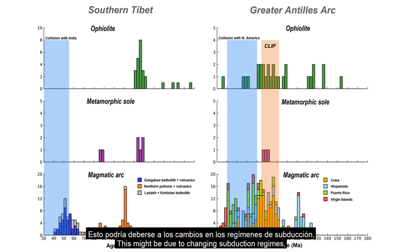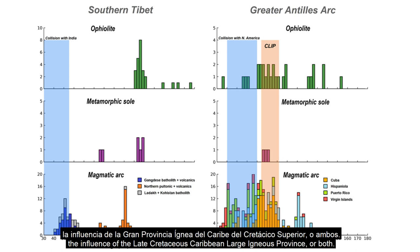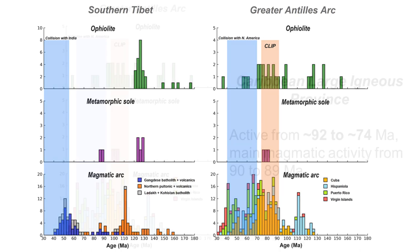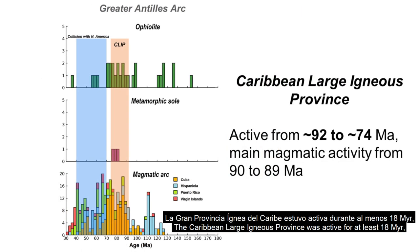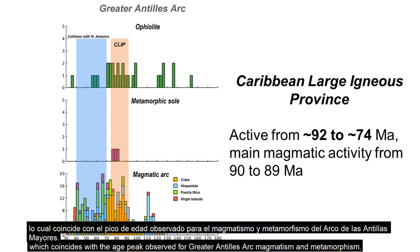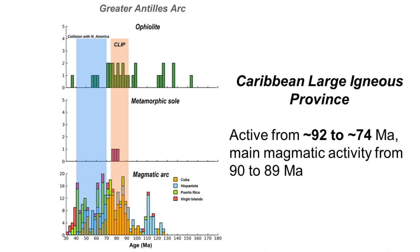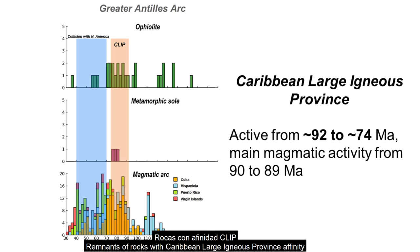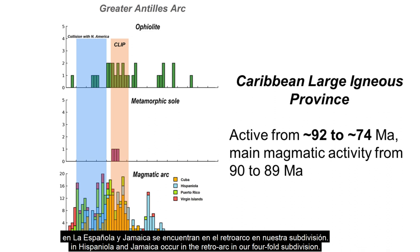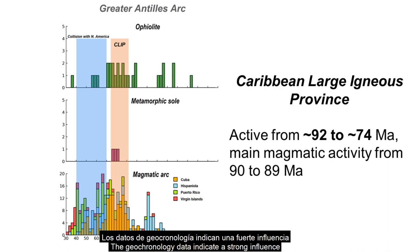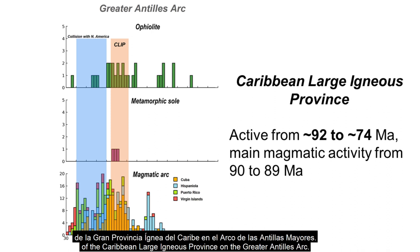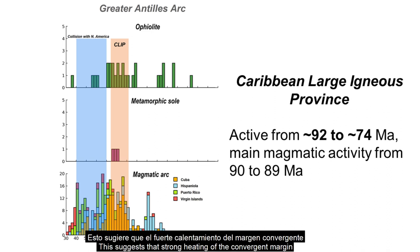The formation of late Cretaceous metamorphic rocks and low-titanium arc tholeiitic rocks of eastern Cuba is further evidence of a more complicated subduction history for the Greater Antilles Arc. This might be due to changing subduction regimes, the influence of the late Cretaceous Caribbean Large Igneous Province, or both. The Caribbean Large Igneous Province was active for at least 18 million years, from around 92 to around 74 million years ago, with the main magmatic activity from 89 to 90 million years ago, which coincides with the age peak observed for Greater Antilles Arc magmatism and metamorphism. The geochronology data indicate a strong influence of the Caribbean Large Igneous Province on the Greater Antilles Arc.